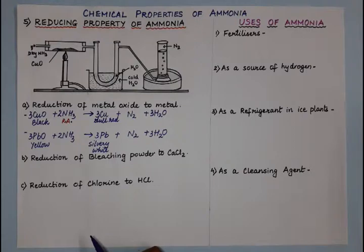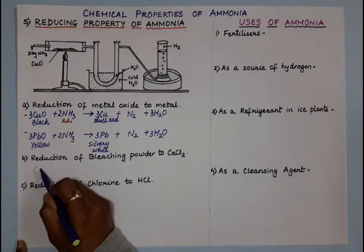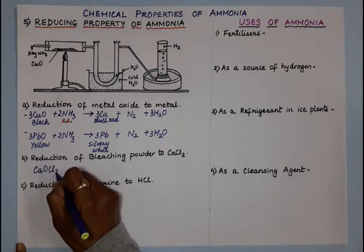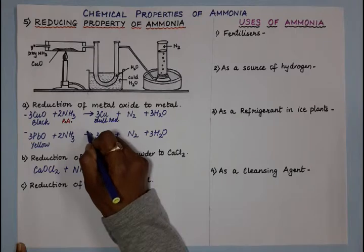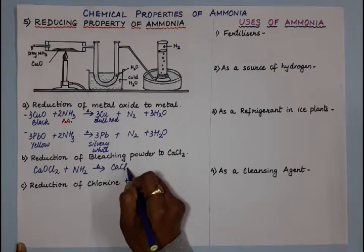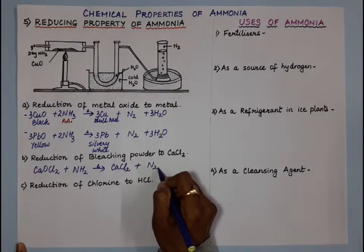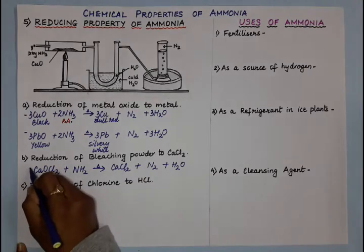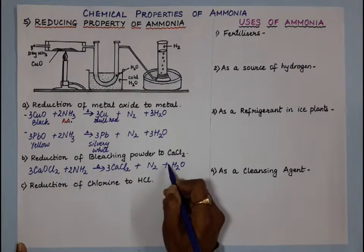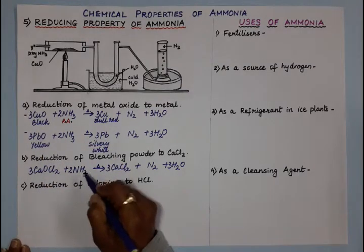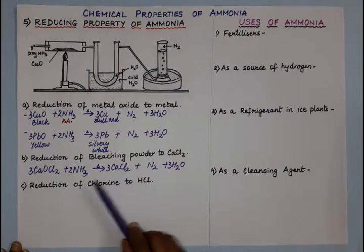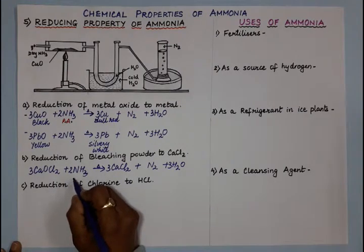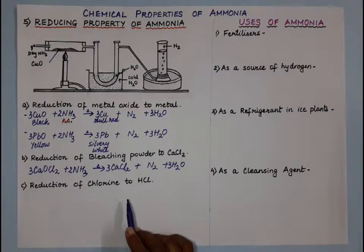These are two reactions where metal oxide is reduced to metal with the help of ammonia as reducing agent. Next is the reduction of bleaching powder to calcium chloride. Bleaching powder is CaOCl₂ (calcium oxychloride). When it reacts with ammonia under heating, we get calcium chloride, nitrogen, and water vapor. The same 3:2–3:3 type balancing applies. Bleaching powder is reduced to calcium chloride, with ammonia acting as the reducing agent.